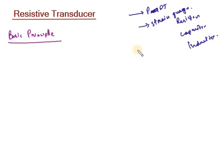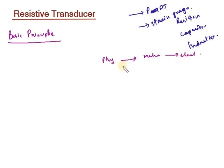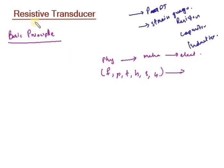We know that one form of energy can be converted into another form. Here, a mechanical energy is converted into electrical energy, or a physical quantity is converted into a mechanical quantity. By using the resistive transducer we can convert physical quantities like force, pressure, temperature, humidity, sound, and light intensity into another form of energy.